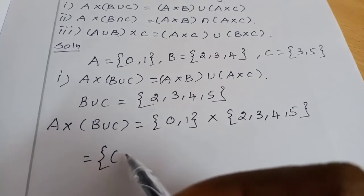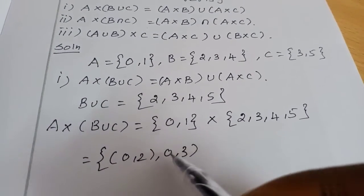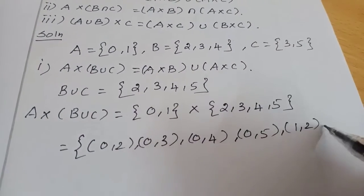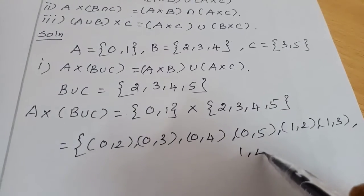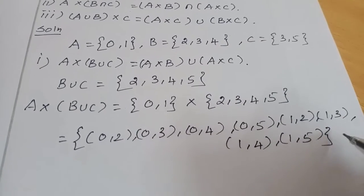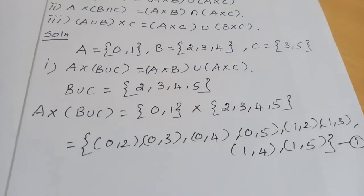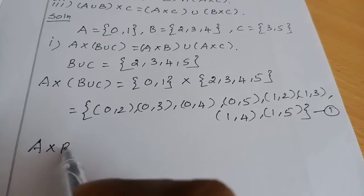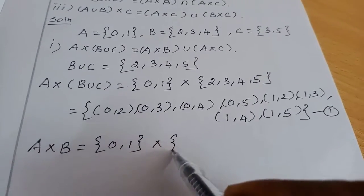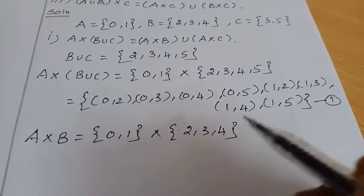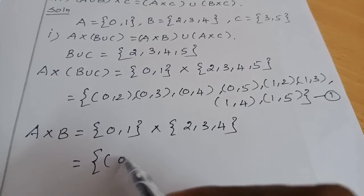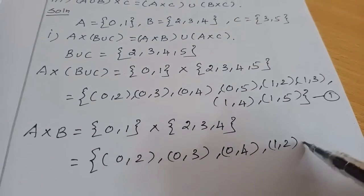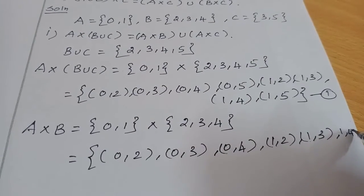The Cartesian product A×(B∪C) gives: (0,2), (0,3), (0,4), (0,5), (1,2), (1,3), (1,4), (1,5). This is equation number 1. Now for the right side, find A×B. A = {0,1}, B = {2,3,4}, so A×B = {(0,2), (0,3), (0,4), (1,2), (1,3), (1,4)}.